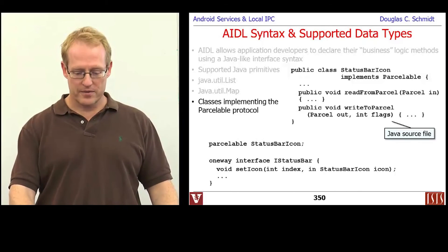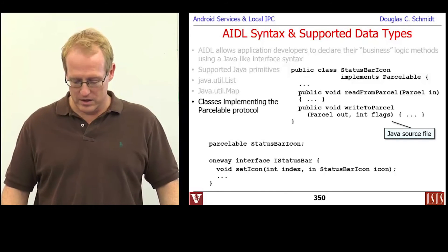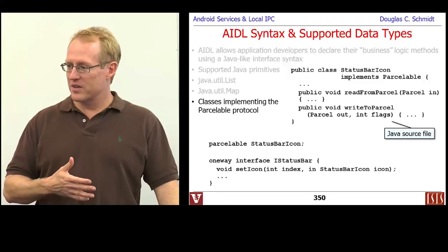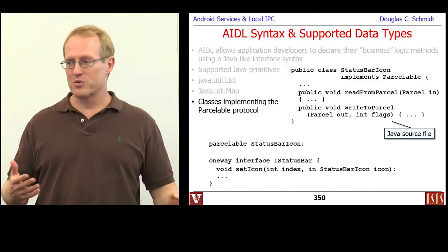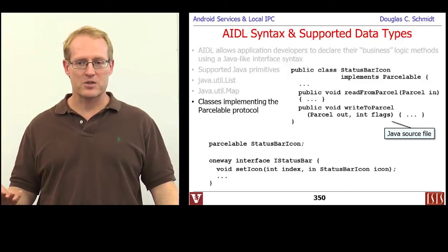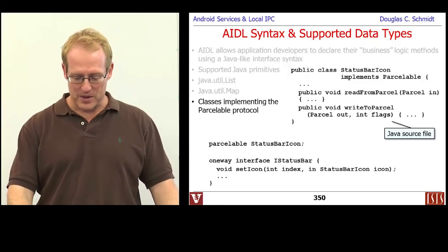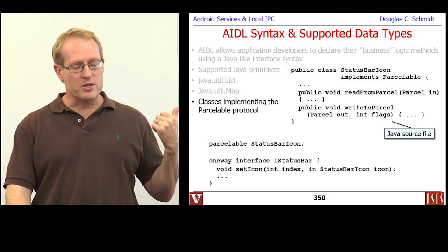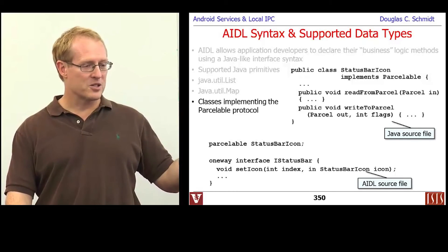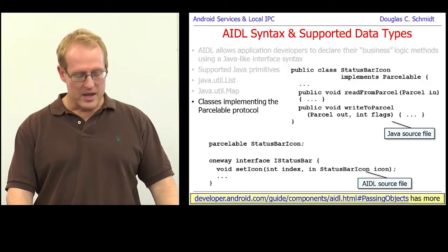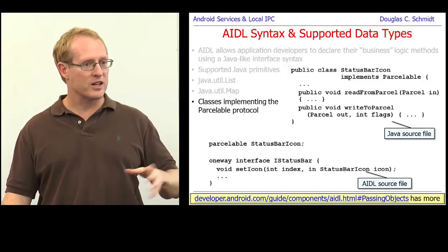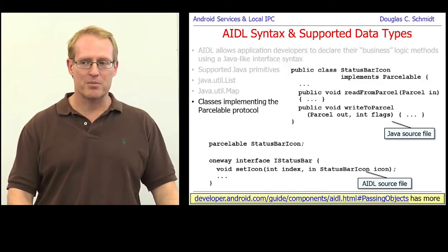Question: why is there no direction qualifier for primitives? Because in Java, primitives are passed by value, so you can't get the result back — Java doesn't have the same thing you'd do in C or C++ where you can take the address of something or pass a reference. StatusBarIcon is a Java source file; the other thing is an AIDL source file, and you can make those work together. There's a description on the Android web page showing more about how to pass objects like this.